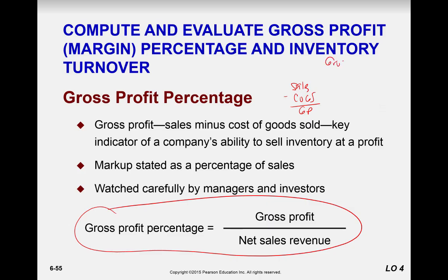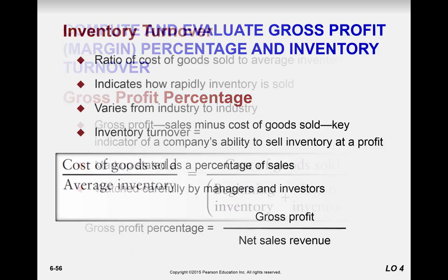You should also have gross sales minus returns and allowances, sales returns and allowances, and sales discounts, giving you net sales. Then net sales minus cost of goods sold equals gross profit. This is basically the markup stated as a percentage of sales — the gross profit percentage — which is very heavily monitored by employees, managers, and investors, because we want gross profit to be as high as possible.